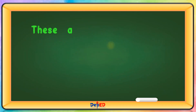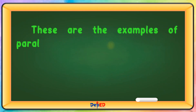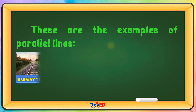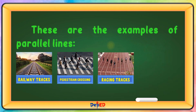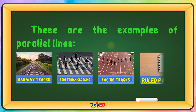These are the examples of parallel lines: railway tracks, pedestrian crossing, racing tracks, and ruled paper.